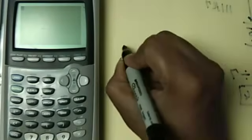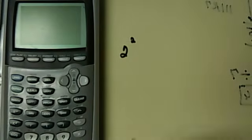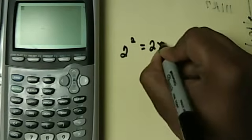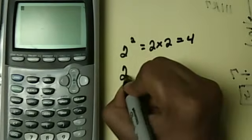Now let's say for example you want to put in 2 to the second. We know 2 to the second is 2 times 2 of course which is 4. So we want to put that in our calculator, 2 to the second.